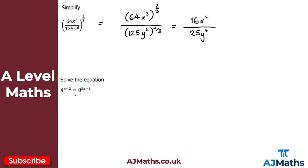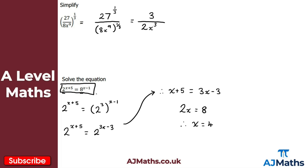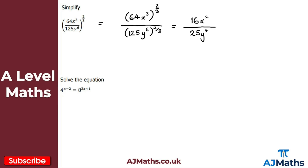The last example asks us to solve 4 to the power of x minus 2 equals 8 to the power of 3x plus 1. This is more complicated than the previous equation because we can't reduce 8 to a power of 4. Instead, we need to reduce both bases to base 2. We write 8 as 2 cubed — raised to the power of 3x plus 1 — and 4 as 2 squared — raised to the power of x minus 2. Now we have a power raised to another power on both sides.